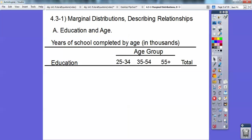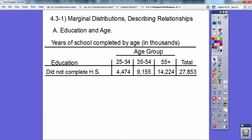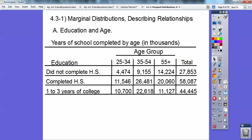Years in school completed by age group in thousands, age group from 25 to 34, 35 to 54, and 55 and older, and their education level. So here we go. Here's the ones who did not complete high school. Now notice this is in thousands, so all these numbers have three zeros after that. So that first number that's 4,474, that's actually 4,474,000. So then you've got the 9 million, the 14 million, and the 27 million, 853,000.